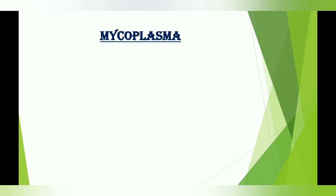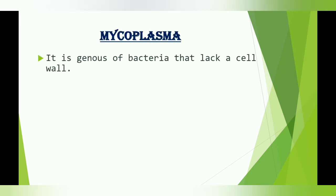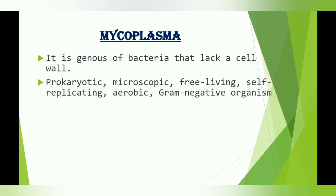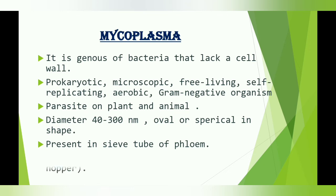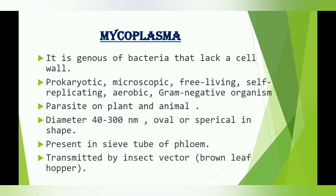Mycoplasma is a genus of bacteria that lacks a cell wall. It is prokaryotic, microscopic, free-living, self-replicating, aerobic, gram-negative organism and a parasite on plants and animals. The diameter is 40 to 300 nanometers, oval or spherical in shape, and it is present in the sieve tubes of the phloem.